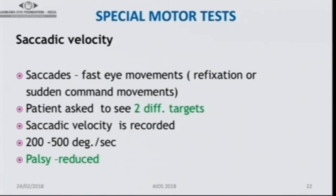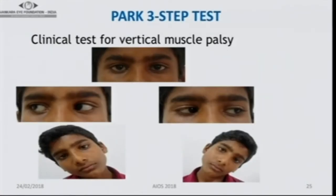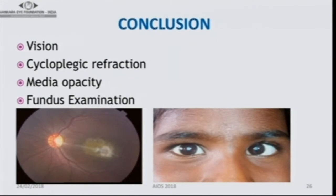Saccades are fast eye movements — refixation or sudden command movements where the patient is asked to see two different targets on either side. In palsies, saccade velocity is usually reduced. The Maddox rod test and synoptophore are available, though the synoptophore is hardly used nowadays. The Parks three-step test is useful for vertical muscle palsy: first note the deviation in primary position, then in right and left gaze, and finally tilt the head to both sides. To conclude: evaluate vision, do a good cycloplegic refraction, rule out media opacities, and most importantly perform fundus examination, as macula pathology can cause sensory deviation.